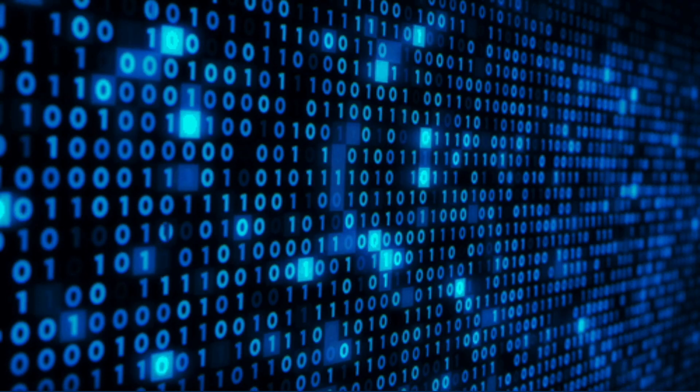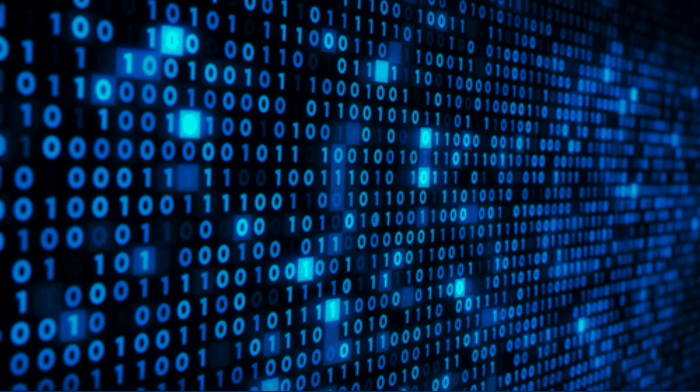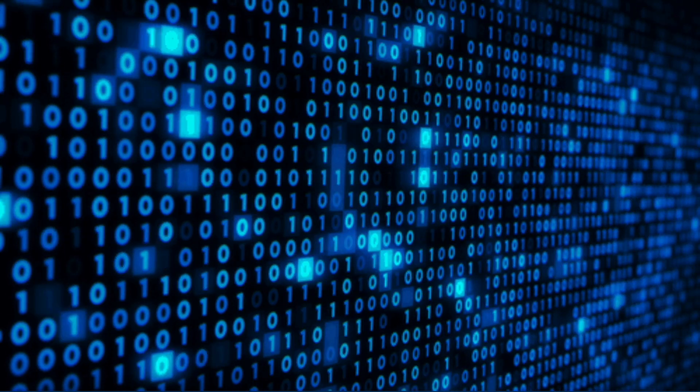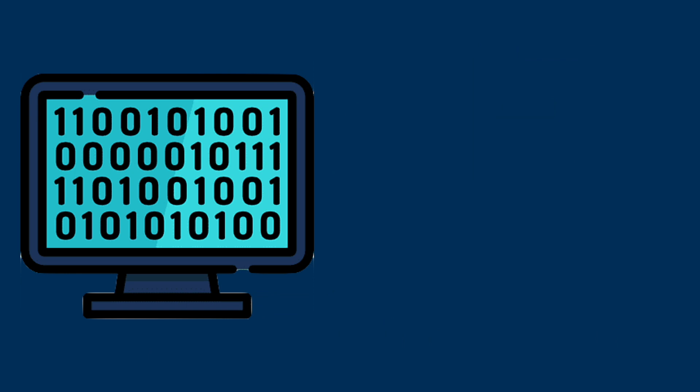You may have heard that at their core, computers function because of ones and zeros, also known as binary. This is true, but how exactly does binary make the computer work? In this video, I will show how by showing how the computer does basic arithmetic.